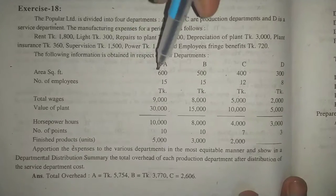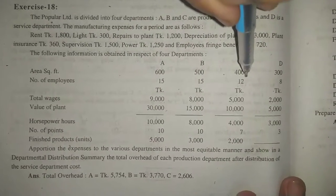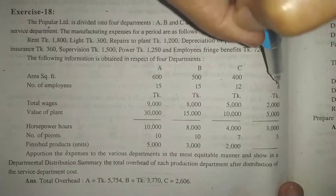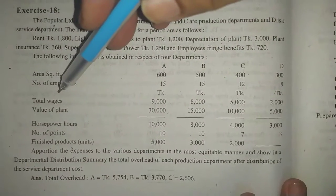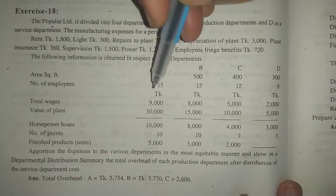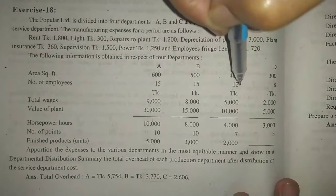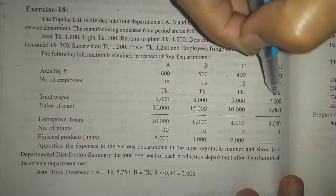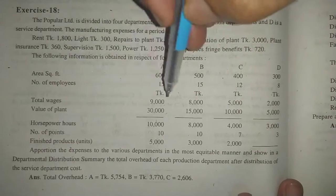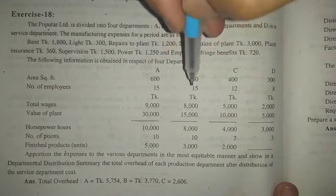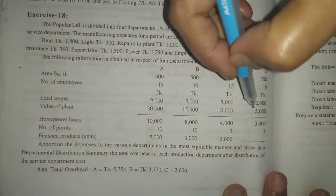Number of employees: A is 50, B is 50, C is 12, D is 8. Horse power: A is 8,000, B is 8,000, C is 5,000, D is 2,000. Value of plant: A is 13,000, B is 15,000, C is 10,000, D is 5,000.